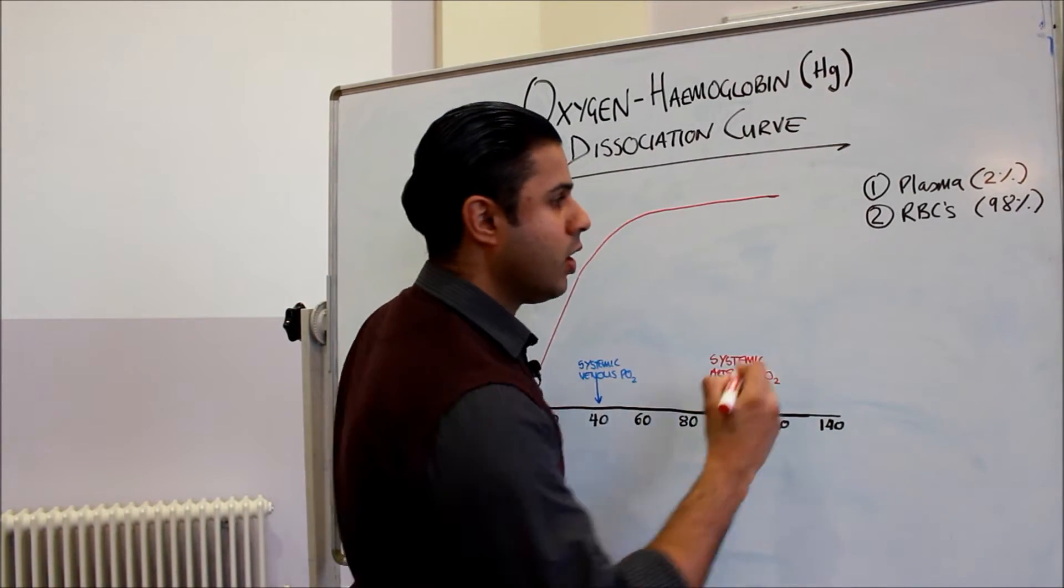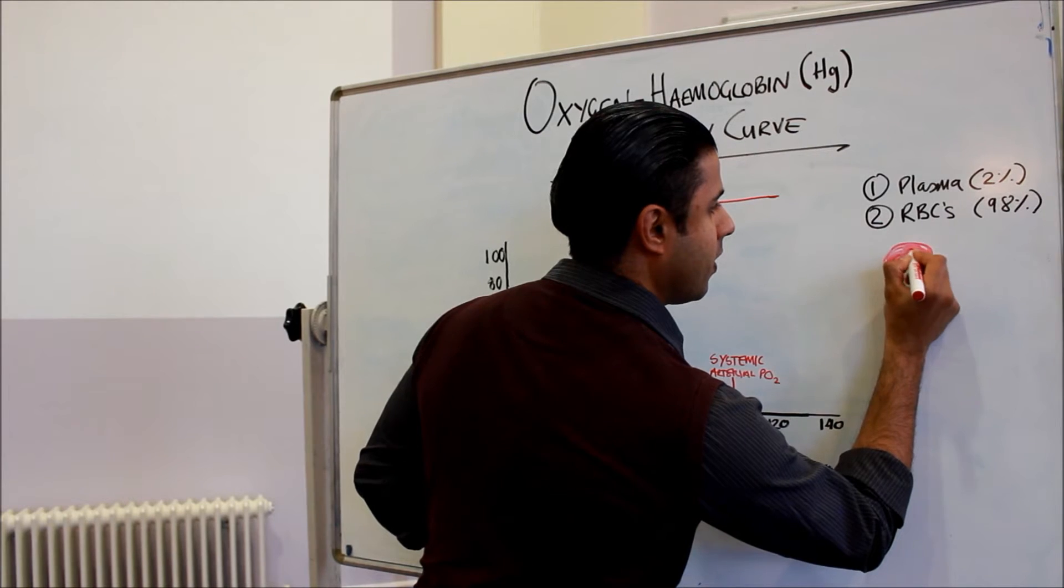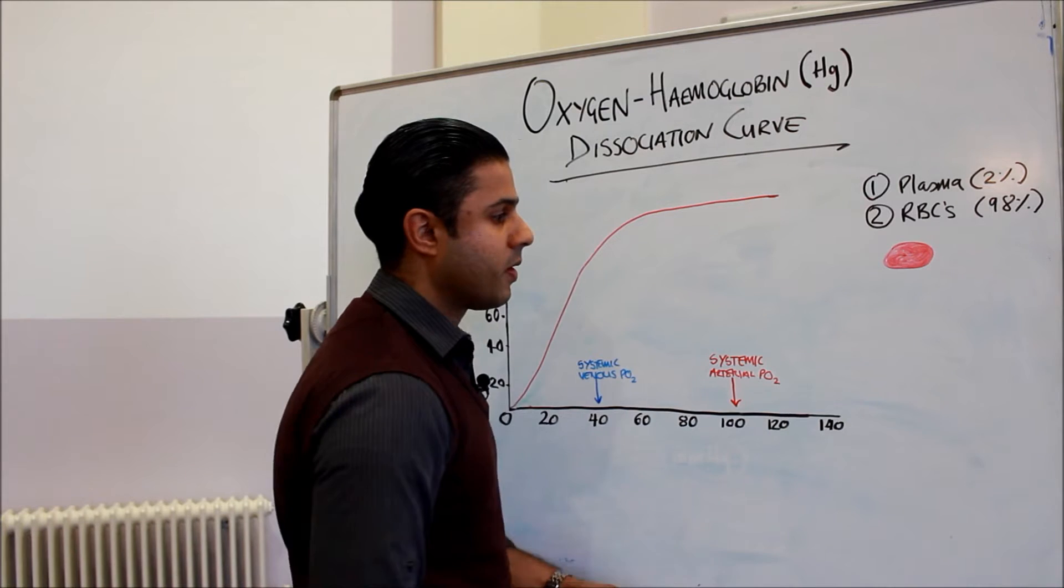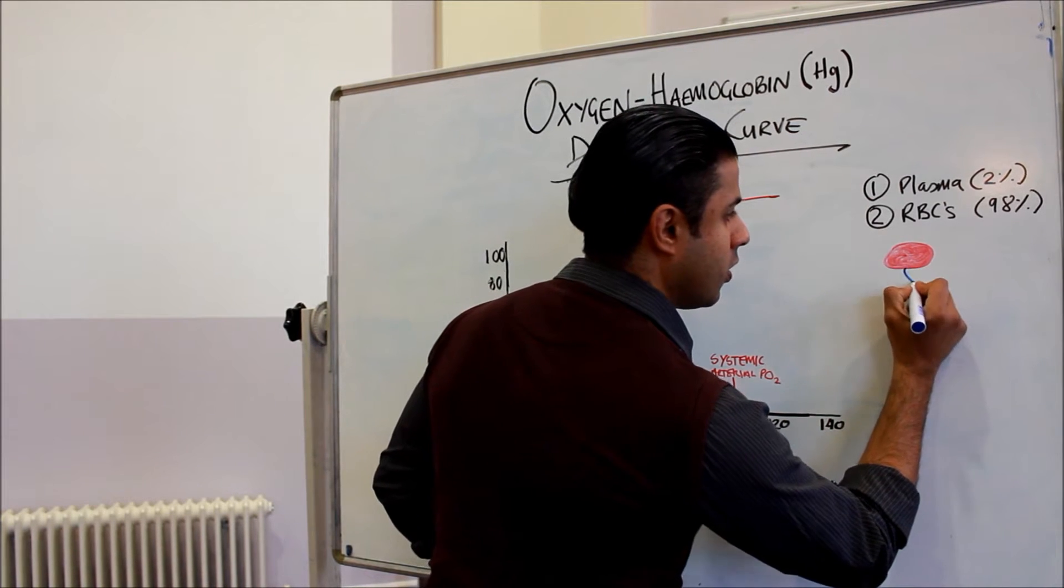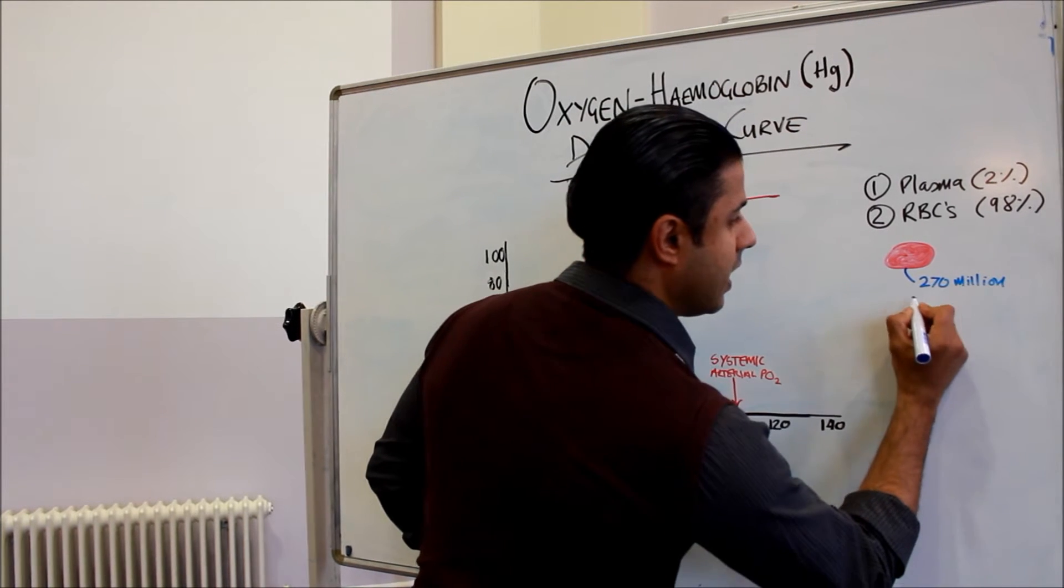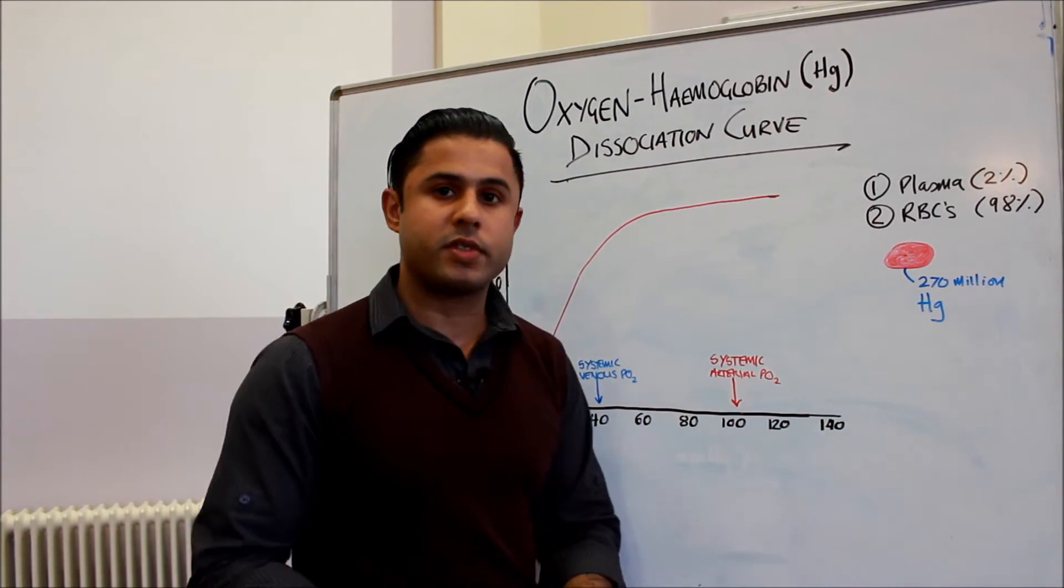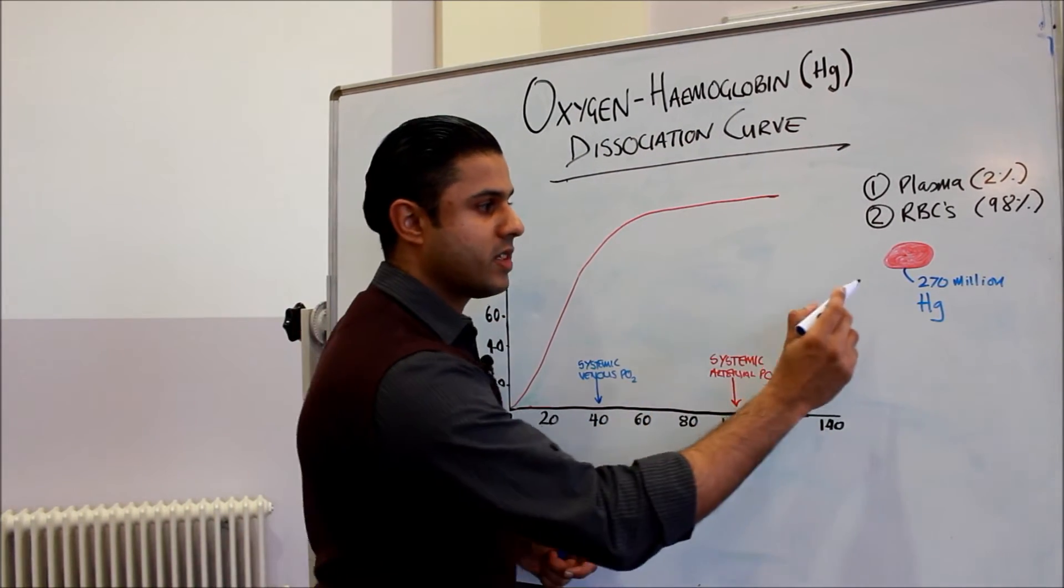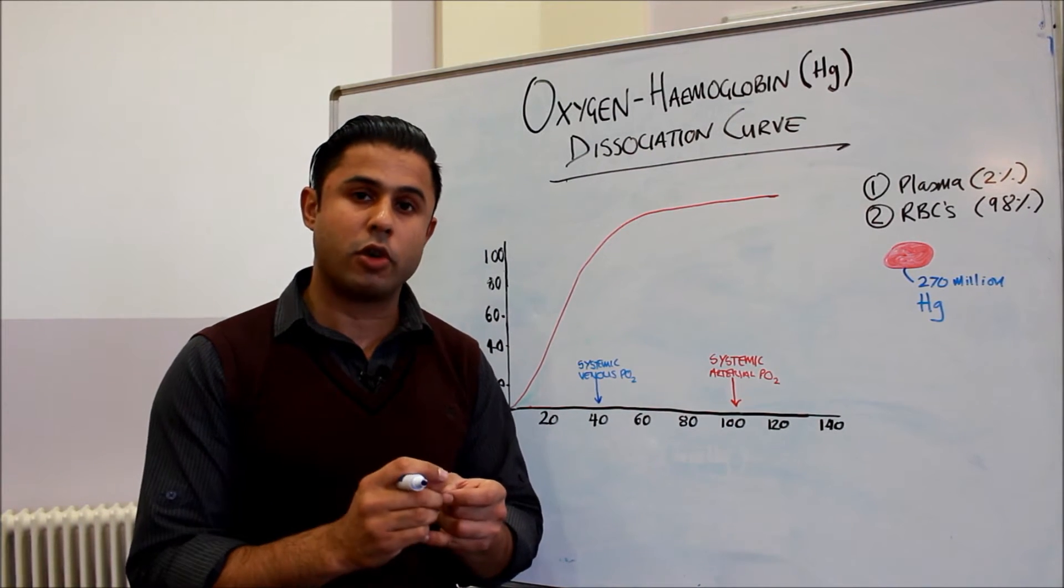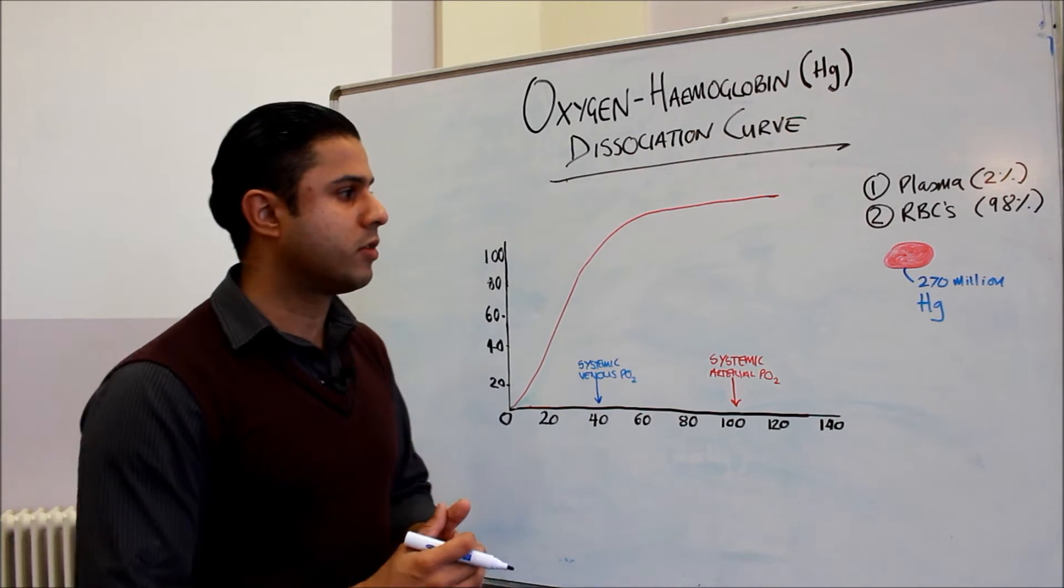Now one red blood cell will contain 270 million hemoglobin molecules, which I'm going to abbreviate as Hg. So each red blood cell in our body contains 270 million hemoglobin molecules, and up to four oxygen molecules can attach to one hemoglobin molecule. So we can see that this is a very efficient way to transport oxygen throughout our body.